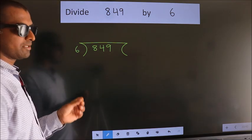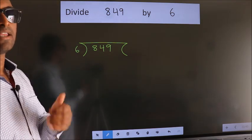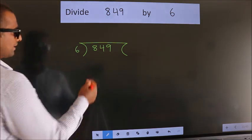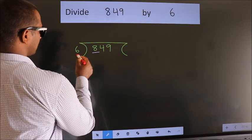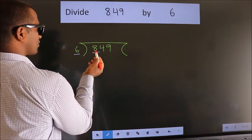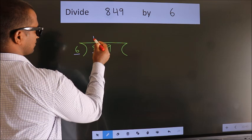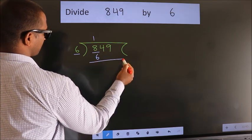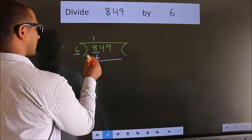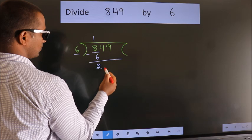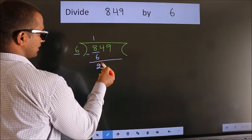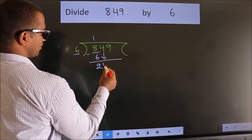This is your step 1. Next, here we have 8. A number close to 8 in the 6 table is 6 times 1 equals 6. Now we should subtract. We get 2. After this, bring down the beside number, so 4 down.